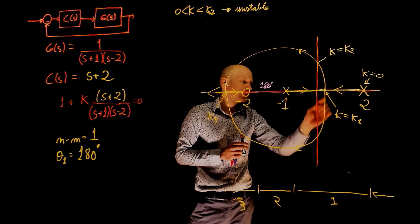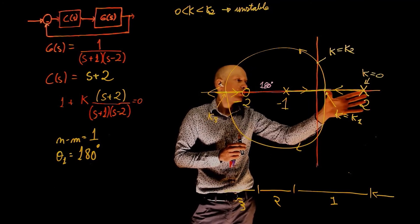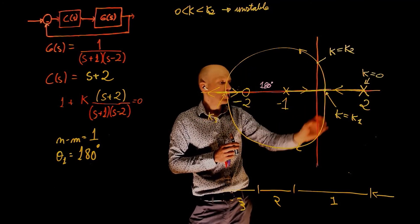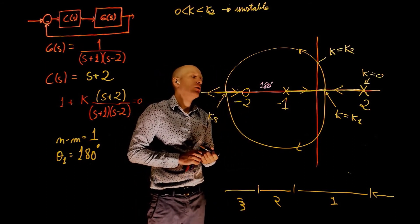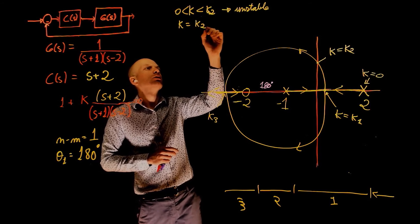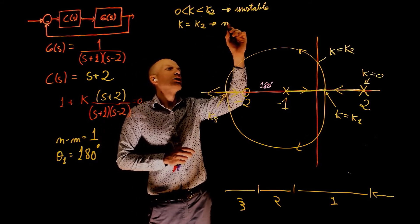K1 doesn't matter because K1 is also unstable. So long as K is between K2 and zero, this pole always has a positive real part and the system is unstable. When K equals to K2, the system is marginally stable.